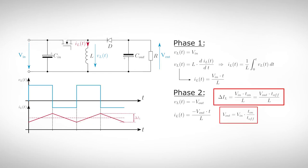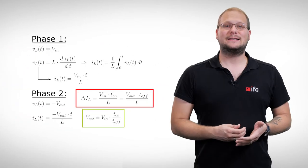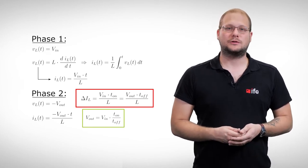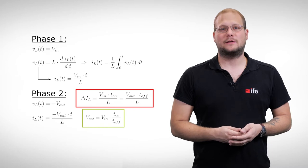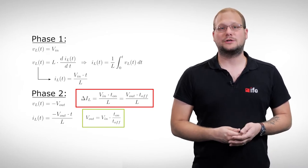The equations for the ripple current are basically the same as for the normal step-up and step-down converter. If we combine them, we can see again that the output voltage only depends on the duty cycle of the switching transistor. We can see that the output voltage can be higher or smaller than the input voltage, depending on the duty cycle. If it is exactly 50%, the input and output voltage have the same value.